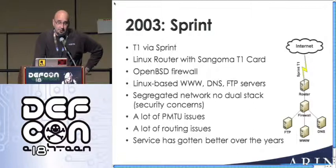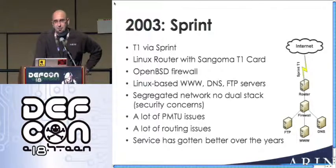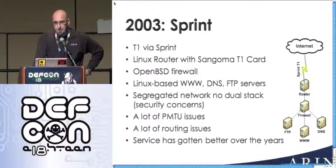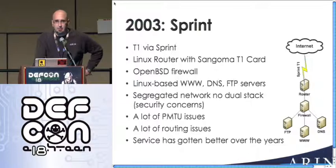The first network we set up was a standalone stub network based on a Sprint T1 circuit. We used a Linux box with a Sangoma T1 card. We had Cisco routers that could do V6, but we chose Linux — partly because it was cool. We actually had to hack the Sangoma T1 drivers to get them to work with V6. Sangoma was thankful; we gave them the code back. Having tcpdump directly on the router was really helpful for troubleshooting, and things were breaking a lot at this time.